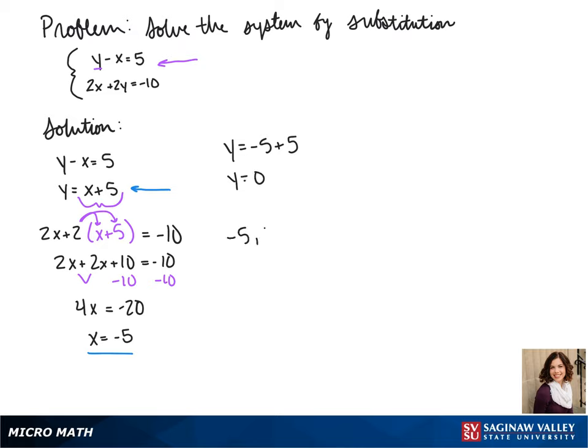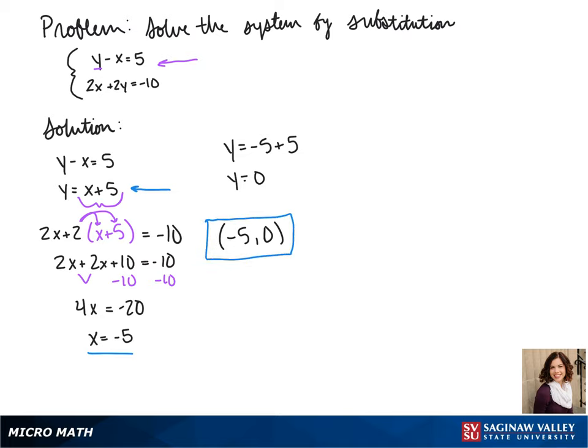So the solution to our system is negative 5, 0. To see what our system looks like, we can graph the equations. We already put our first equation into y-intercept form, so we graph our intercept and find some other points using our slope and connect those.